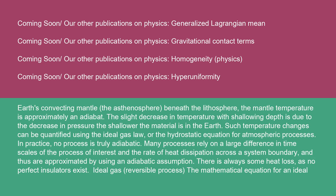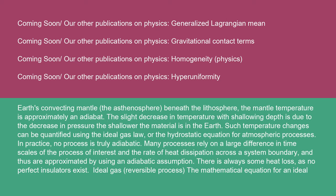In the Earth's convecting mantle — the asthenosphere beneath the lithosphere — the mantle temperature is approximately an adiabat. The slight decrease in temperature with shallowing depth is due to the decrease in pressure the shallower the material is in the Earth. Such temperature changes can be quantified using the ideal gas law or the hydrostatic equation for atmospheric processes. In practice, no process is truly adiabatic. Many processes rely on a large difference in time scales of the process of interest and the rate of heat dissipation across a system boundary, and thus are approximated by using an adiabatic assumption. There is always some heat loss, as no perfect insulators exist.